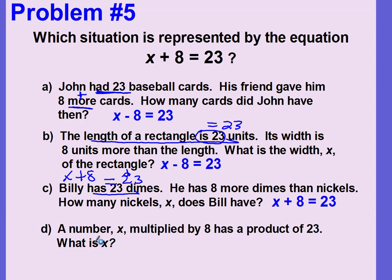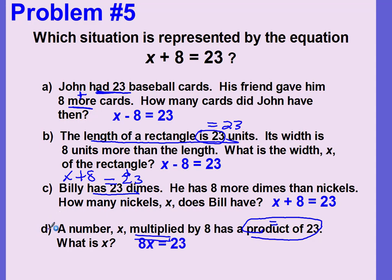Let's also look at D just for fun. A number x multiplied by 8 has a product of 23. The equals amount is 23, but 'multiplied' is not the operation we're looking for — that would be 8 times x equals 23. So the correct answer was C. Nice job, Bobcats!